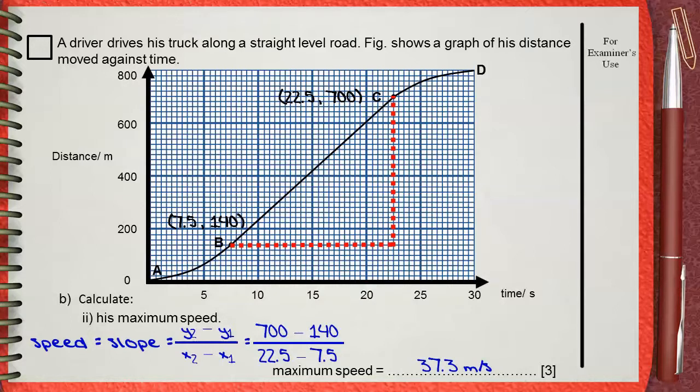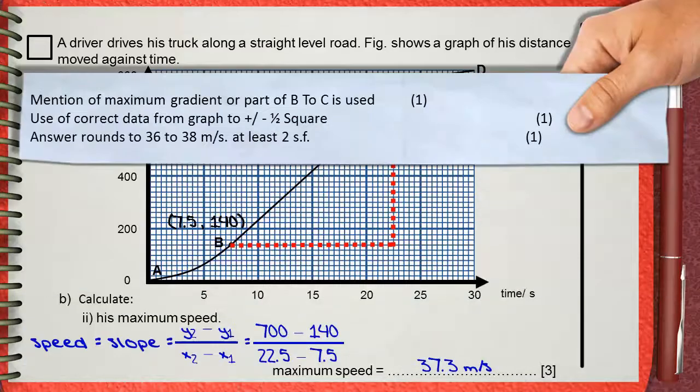The mark scheme awards three marks for this answer. The first mark is to find out that the maximum speed shown in the graph is given by the region from B to C. The second mark is for using correct data from the graph of the coordinates of the points. The third mark is for the final answer, which is between 36 to 38 meters per second. You must give the final answer in at least two significant figures.